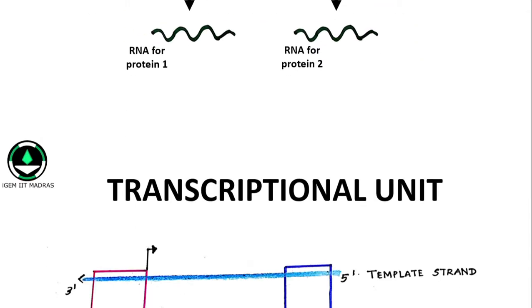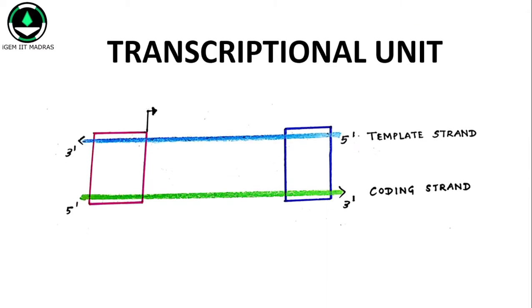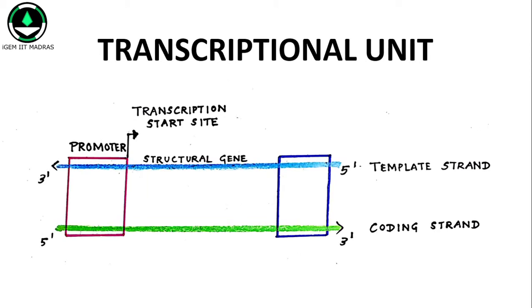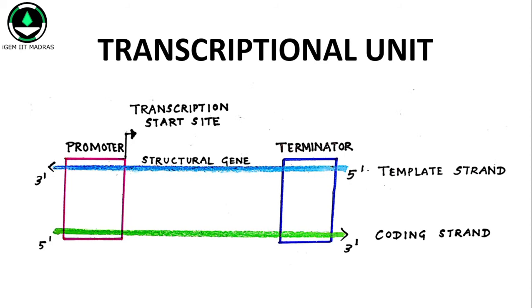A transcriptional unit consists of three parts: the Promoter, the Structural Genes, and the Terminator. These are the key components involved in the transcription of DNA into RNA.